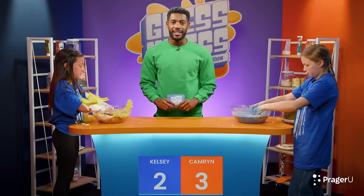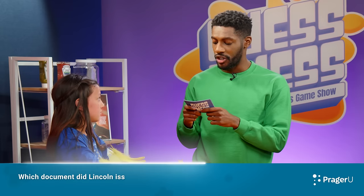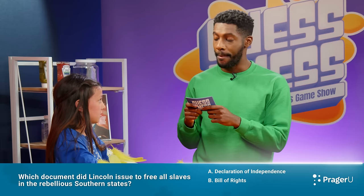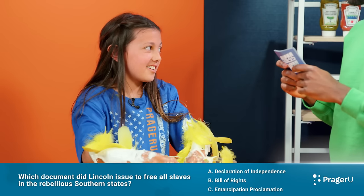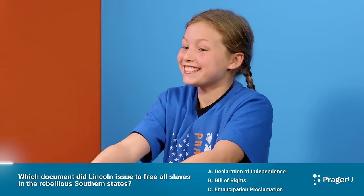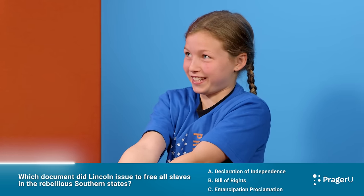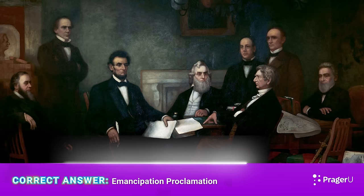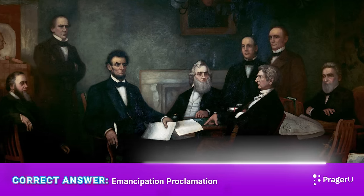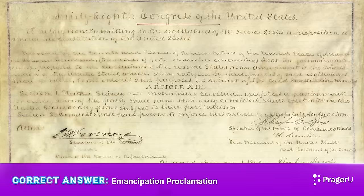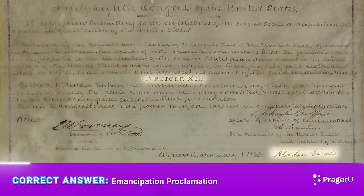And now back to Abraham Lincoln. The next question is for Kelsey. Which document did Lincoln issue to free all slaves in the rebellious southern states? A. Declaration of Independence. B. Bill of Rights. Or C. Emancipation Proclamation. C. Emancipation Proclamation. That is incorrect for Kelsey. Cameron steals it — C. Emancipation Proclamation. Correct. On January 1st, 1863, Lincoln issued the Emancipation Proclamation, which declared that all slaves in the rebelling states shall be thenceforward and forever free. He later supported the 13th Amendment, which ended slavery across the entire country.